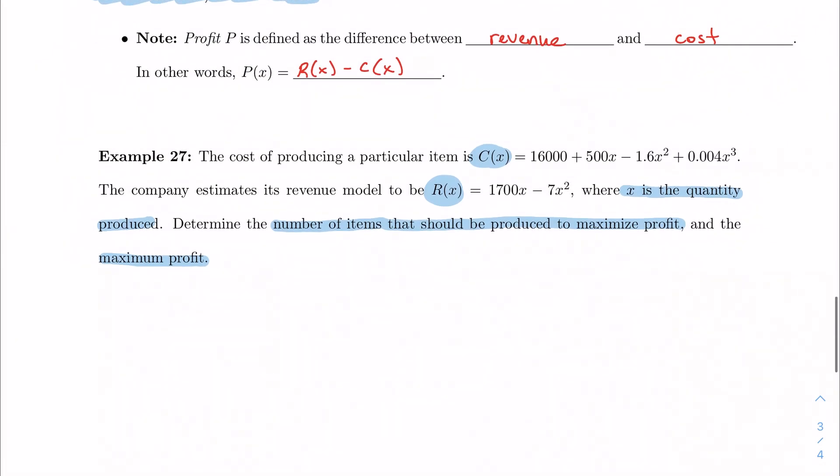And you might be looking at me going, well, you just said one function and there are two functions. Well, we're trying to make one function, right? And we have one function when we have to consider profit, which is what we were asked to do. Because I want to deal with profit, I should find the profit function, and that's what I'm going to do here.